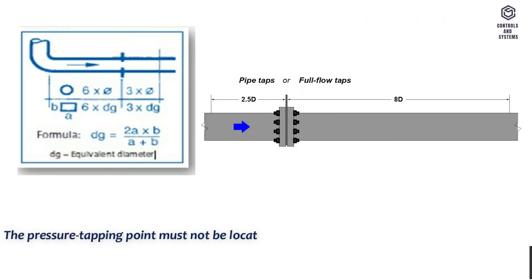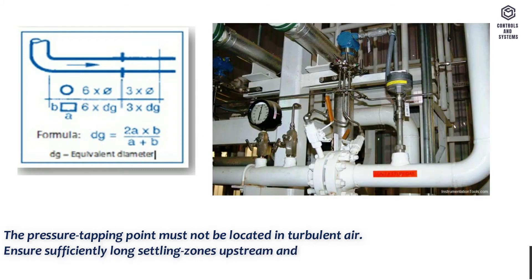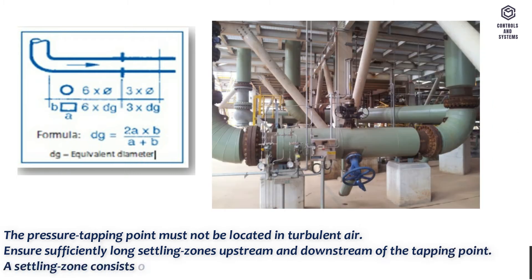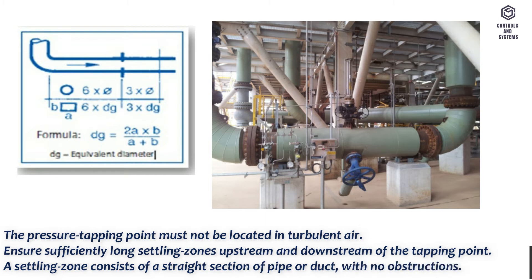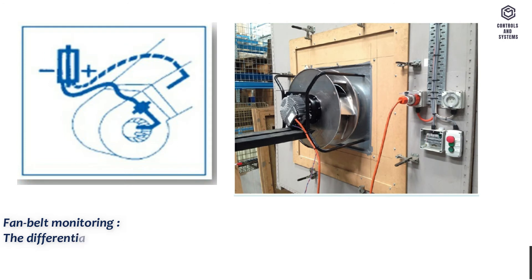For flow velocity air sensors, the pressure tapping point must not be located in turbulent air. Ensure sufficiently long settling zones upstream and downstream of the tapping point. A settling zone consists of a straight section of pipe or duct with no obstructions.